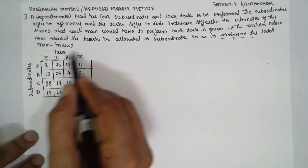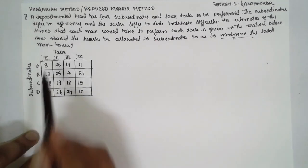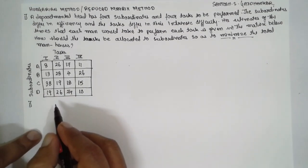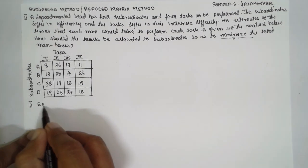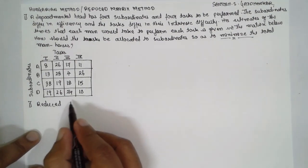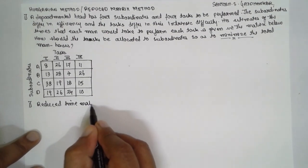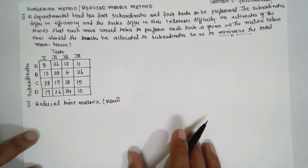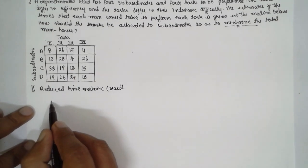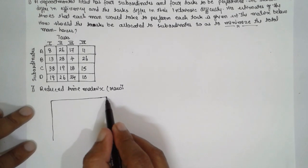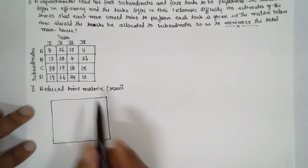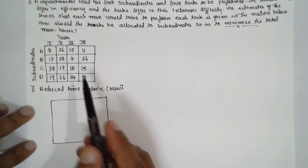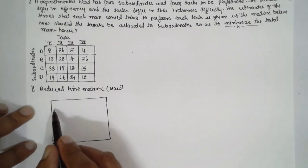This is the matrix showing subordinates, tasks, and man-hours. The first step is to reduce this matrix row-wise — that is, reduce the time matrix in terms of rows. We write this matrix as it is, then select the minimum number from each row and deduct that value from all elements in that row. Let me show you how this is performed.